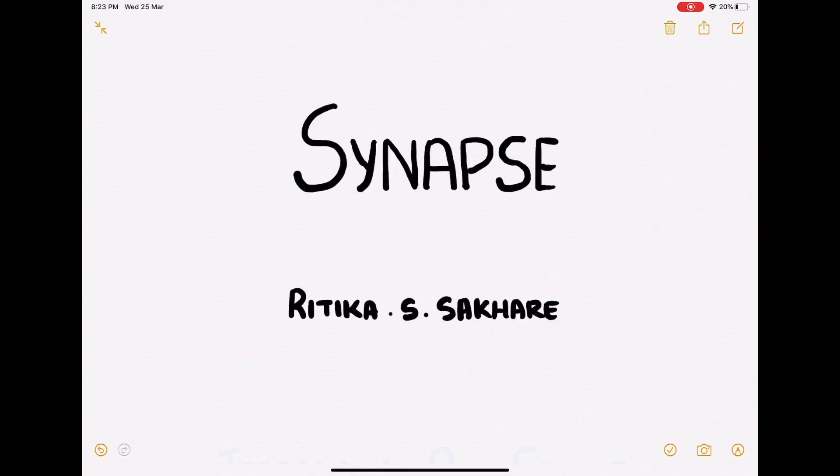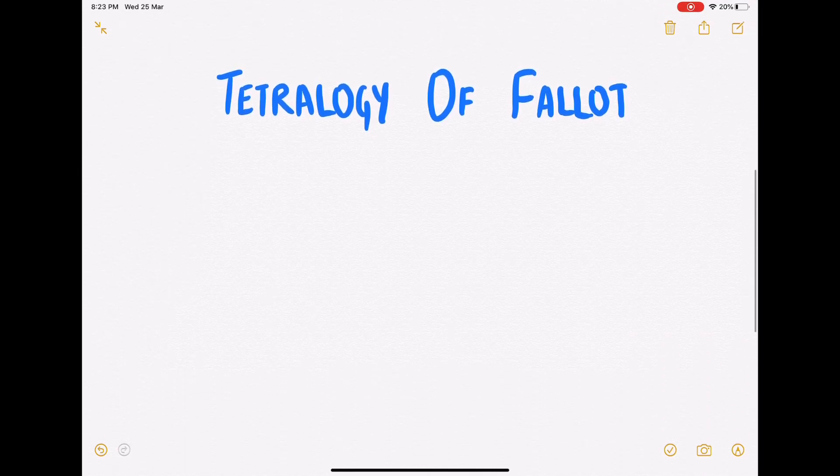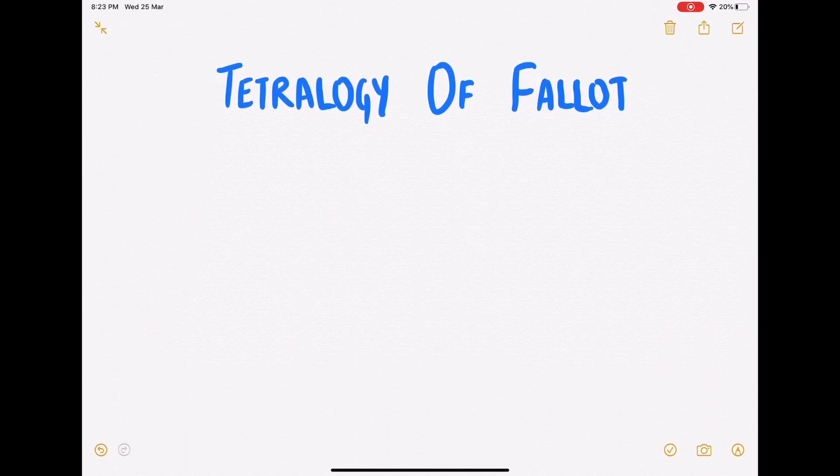Hello everybody and welcome back to Synapse. This is Ritika and today we'll talk about Tetralogy of Fallot. Well, what is Fallot? He's the person who first described this condition. So let's talk about the tetralogy. It definitely implies that it is a combination of four pathologies which is resultant of one main developmental error.